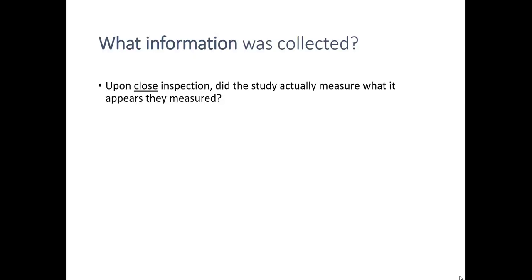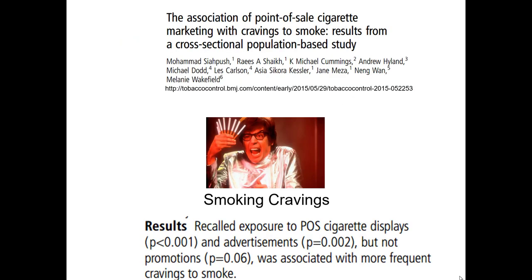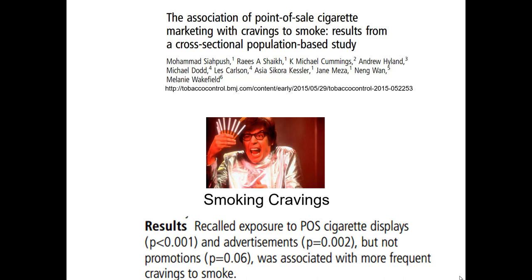The third question we ask when evaluating secondary research studies is what information was collected. When we inspect a secondary study closely, did the study actually measure what it appears they measured? Here's an interesting example from an article called 'The Association of Point-of-Sale Cigarette Marketing with Cravings to Smoke,' a cross-sectional population-based study. This study looked at what induced people to have smoking cravings amongst people who are already smokers.